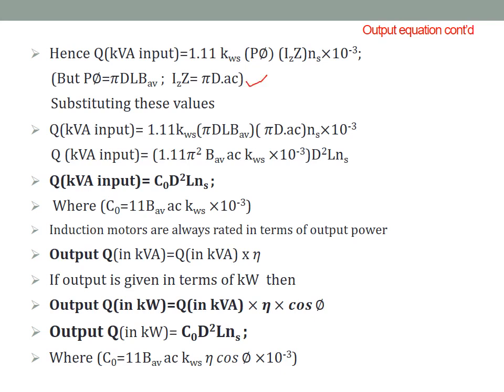Substituting these values: Q KVA input = 1.11·Kw·(π·D·L·B_avg)·(π·D·AC)·Ns × 10⁻³ = 1.11·π²·B_avg·AC·Kw × 10⁻³ · D²·L·Ns. So finally, Q KVA input = C₀·D²·L·Ns, where C₀ = 11·B_avg·AC·Kw × 10⁻³ (since 1.11·π² ≈ 11). This has also been discussed in DC machines.